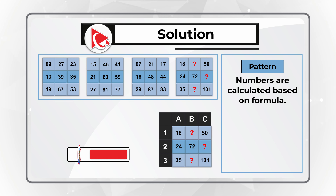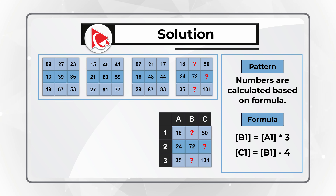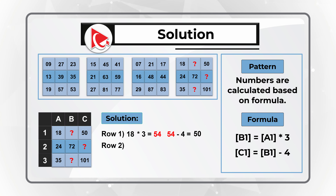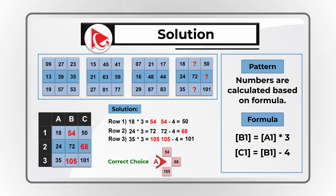Breaking the matrix into columns A, B, and C with rows 1, 2, and 3: B1 is calculated as A1 multiplied by 3, and C1 is B1 minus 4. For row 1: 18 times 3 equals 54, and 54 minus 4 equals 50. For row 2: 24 times 3 equals 72, and 72 minus 4 equals 68. For row 3: 35 times 3 equals 105, and 105 minus 4 equals 101. The correct answer is Choice A: 54, 68, and 105.